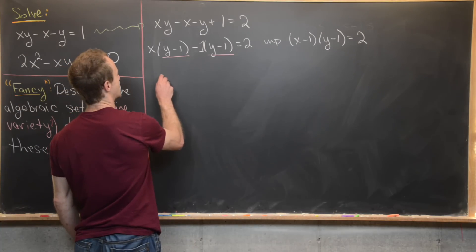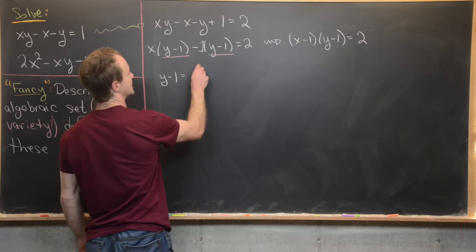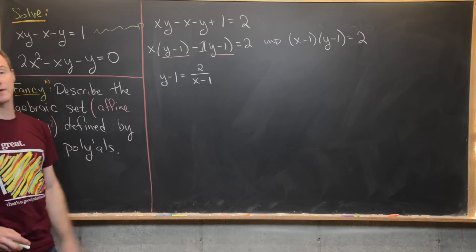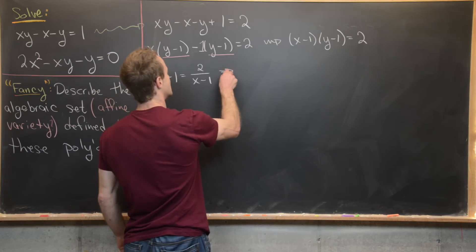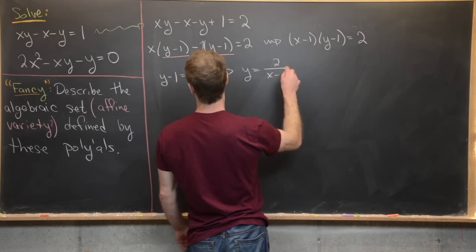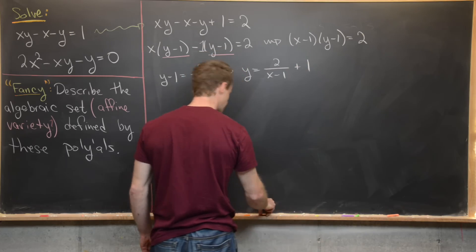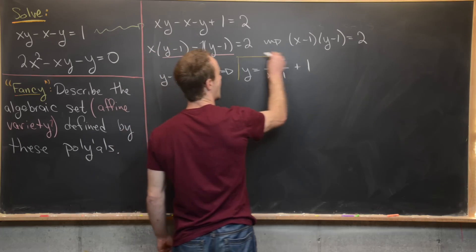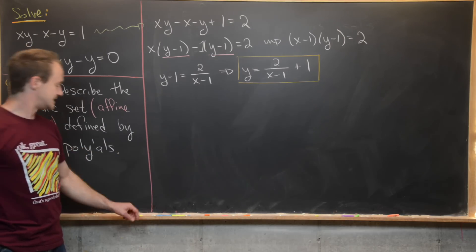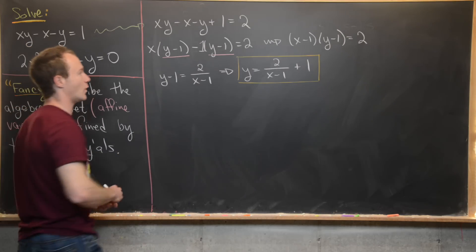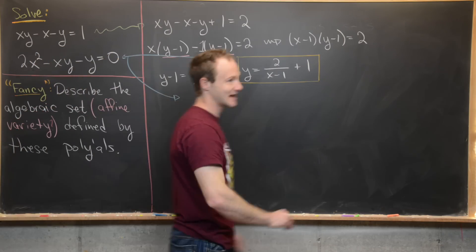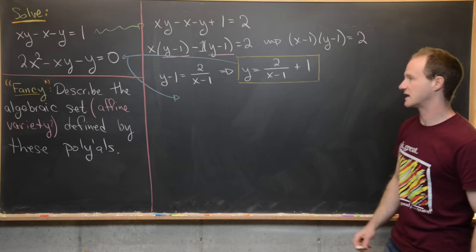So let's go ahead and do that. We're going to have y - 1 = 2/(x - 1), just by dividing both sides by x - 1. But now that's going to give us y = 2/(x - 1) + 1. Okay, so now we have y written in terms of x. So we'll now take this version of y in terms of x and we'll throw it into our second equation and see what that gives us.